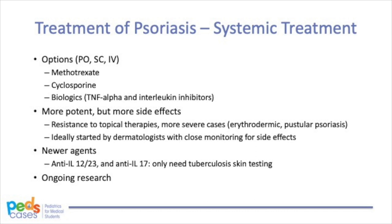Systemic therapies are usually more potent than topical counterparts but at the expense of more potential adverse effects. These can be delivered as oral, subcutaneous, or intravenous forms, and include methotrexate, cyclosporine, and biologics such as TNF-alpha inhibitors and interleukin inhibitors. Some side effects include hepatotoxicity, nephrotoxicity, and pancytopenia. Systemic therapies are generally reserved for patients with resistance to topical therapies, in addition to erythrodermic and pustular psoriasis, and should ideally be initiated by dermatologists. Newer agents approved for psoriasis include anti-interleukin 12/23 and anti-interleukin 17 therapies. These biologics do not require intensive monitoring — patients only need a tuberculosis skin test prior to initiating therapy. Psoriasis is an active area of research, so keep up to date with the latest available therapies.